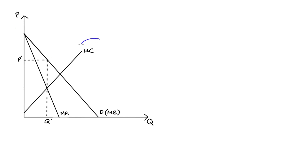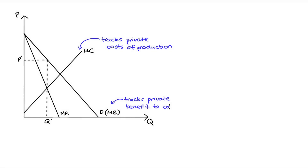These curves only cover what we call the private costs of production and the private benefits of consumption. Our demand or marginal benefit curve tracks how much benefit a consumer gets from consuming a good, and the marginal cost curve tracks the private cost incurred by the producer — how much a good costs to produce.